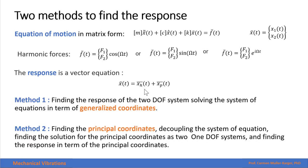The two methods are: finding the response using directly the generalized coordinates. The second method is converting the system to principal coordinates, for which we have to decouple the system of equations, finding the solution for the principal coordinates as two one-degree-of-freedom systems, and finding then the response in terms of these principal coordinates.